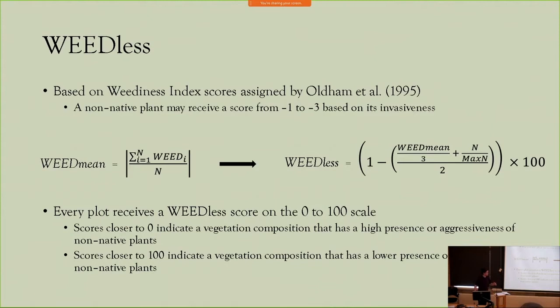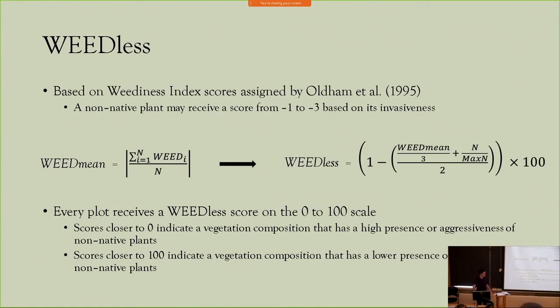To assess the quality of non-native vegetation, I used the weedless indicator as developed by Dr. Pirit Mladenovic, which is based on the weediness index scores assigned by Oldham, Bukowski, and Sutherland for all non-native plant species in southern Ontario. A non-native plant may receive a score from negative one to negative three based on its invasiveness, with negative one being the least invasive and negative three being the most invasive. You calculate the average weediness index score per plot and plug it into an equation that includes elements of species richness. The result is a score on a 0 to 100 scale, where scores closer to zero indicate higher presence or aggressiveness of non-native plants, and higher scores indicate lower presence or aggressiveness of non-native plants.